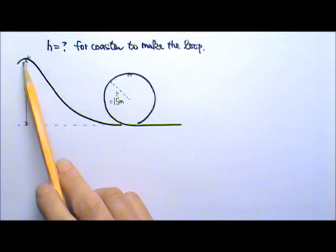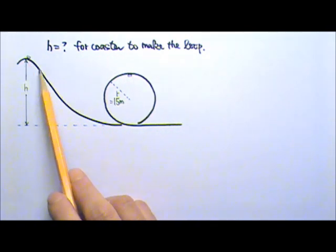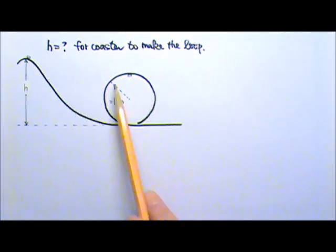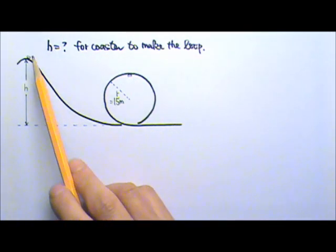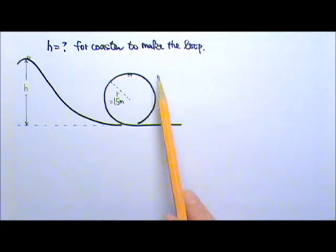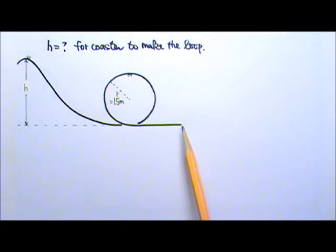A small roller coaster with very light wheels is pulled to the top of the hill and then released from rest. The entire track is frictionless and air resistance is negligible. Find the minimum height of the hill so the coaster can complete the 15m radius circular loop.